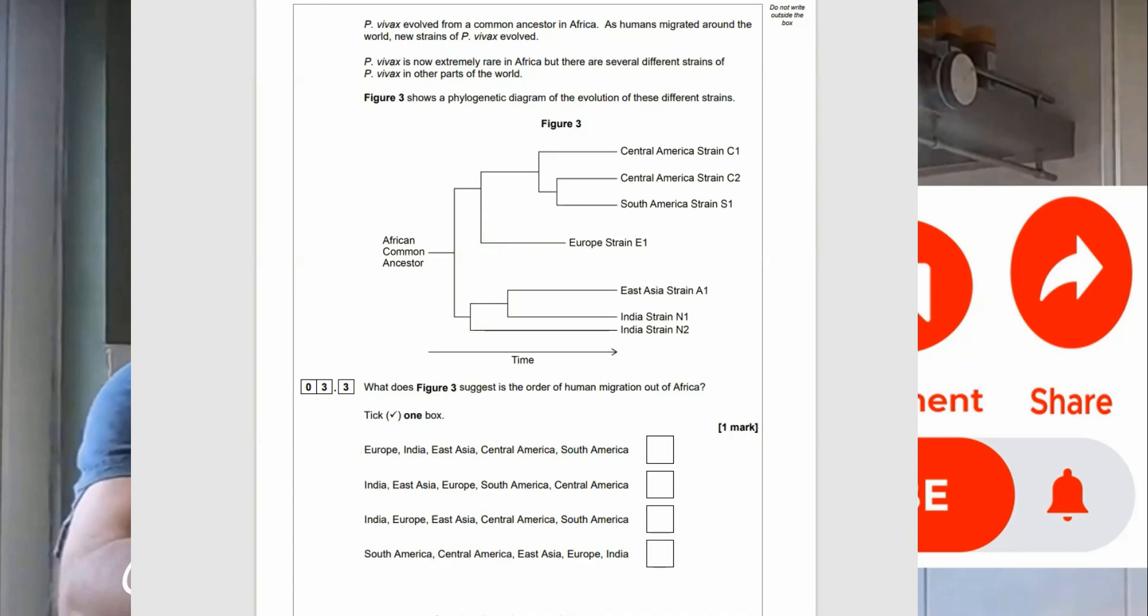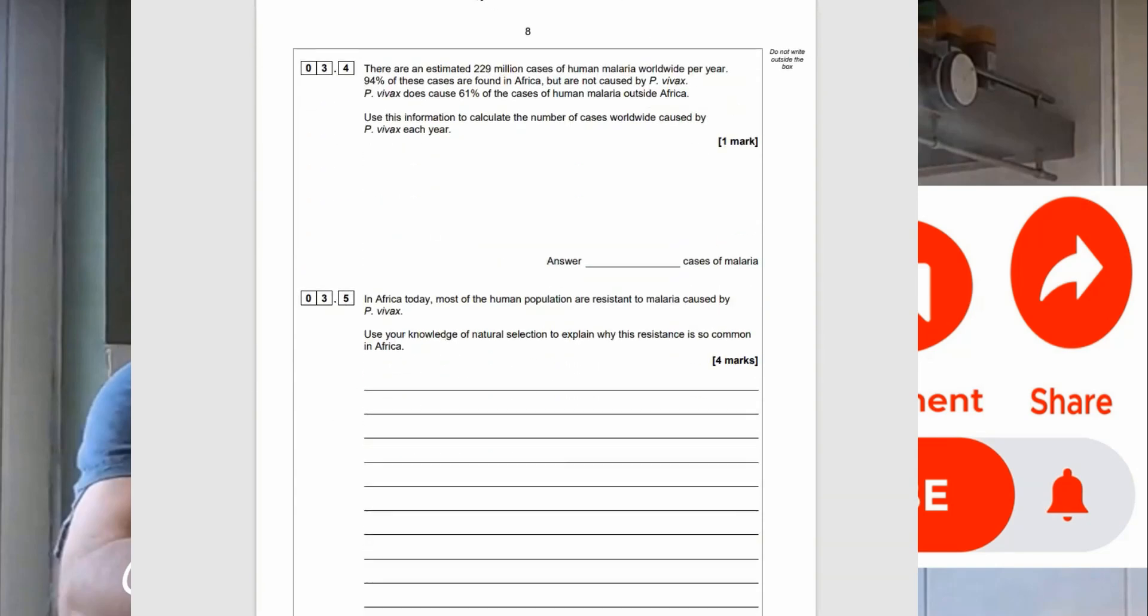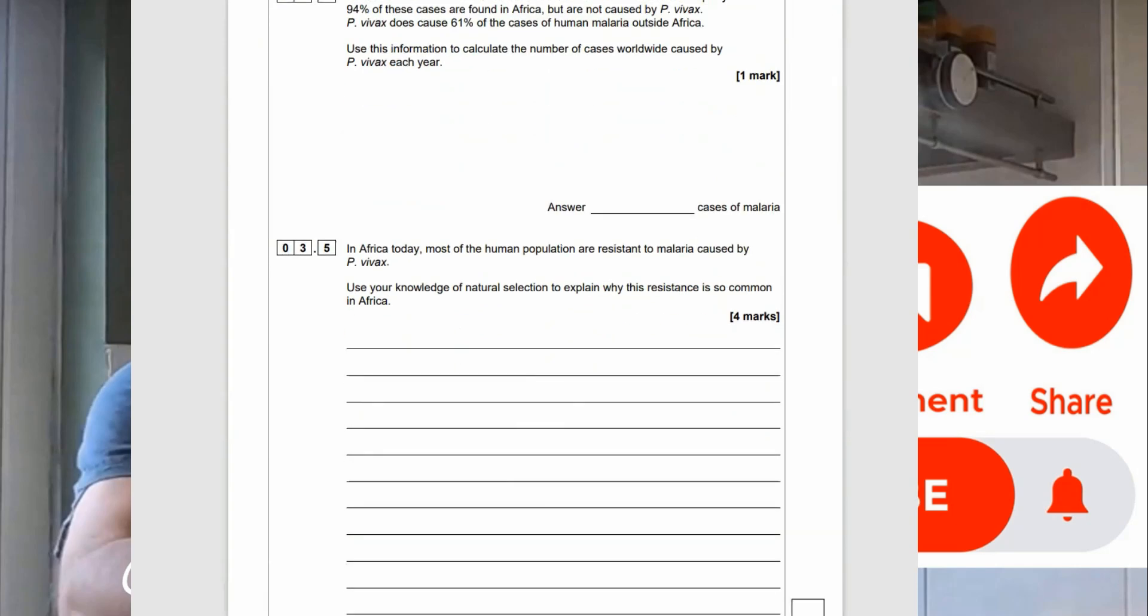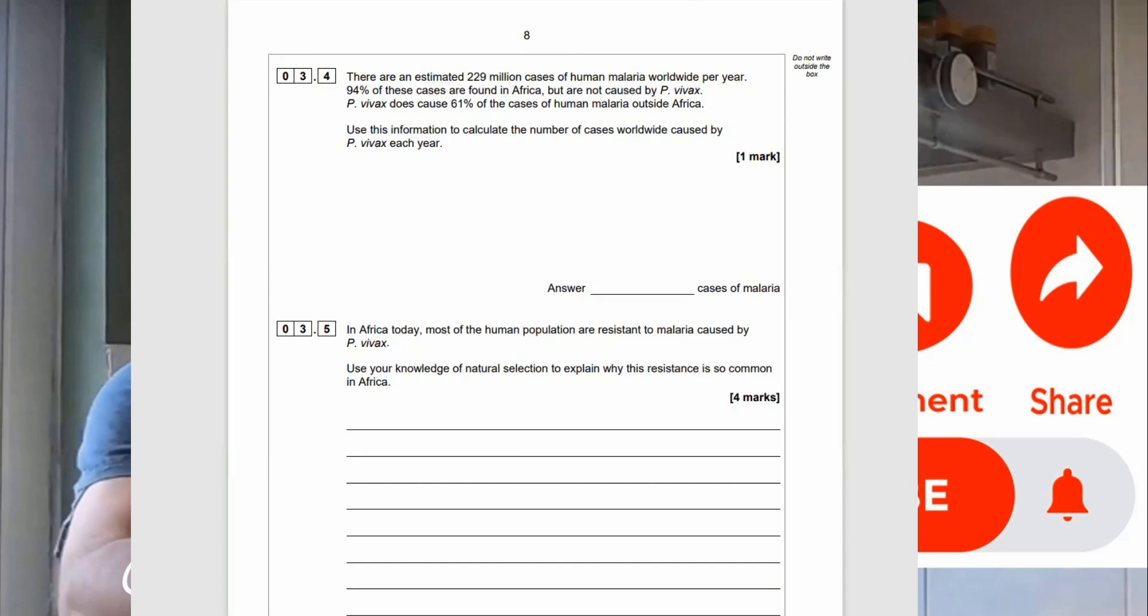Now, 3.4 is a calculation. So, there are an estimated 229 million cases of human malaria worldwide per year. 94% of these cases are found in Africa, but are not caused by P-vivax. P-vivax does cause 61% of the cases of human malaria outside Africa. Use this information to calculate the number of cases worldwide caused by P-vivax every year.